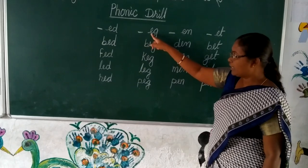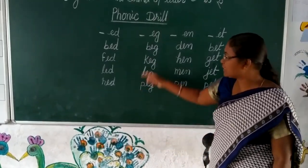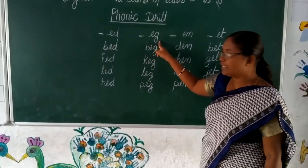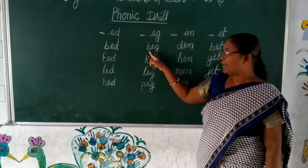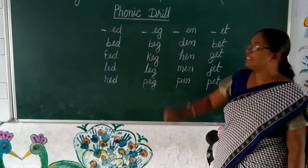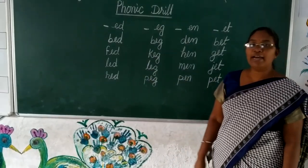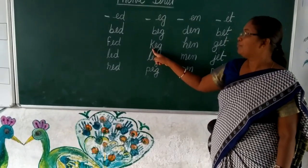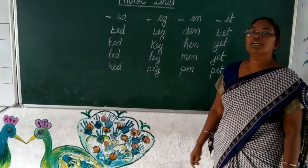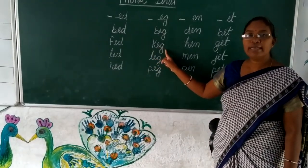Here is letter E. The phonic sound is 'egg'. We added letter B before E — the phonic sound is 'b-eg'. Next we added letter K before E — the phonic sound is 'k-eg'.